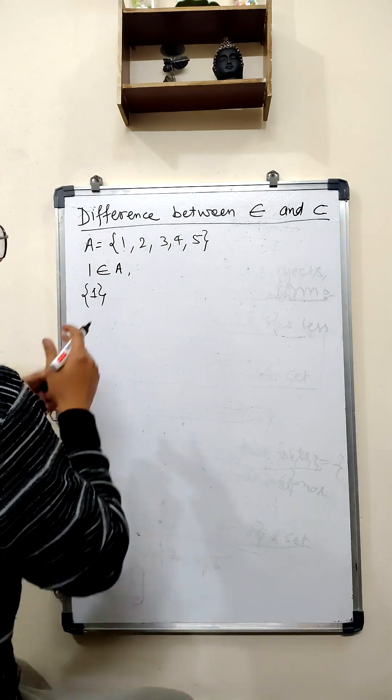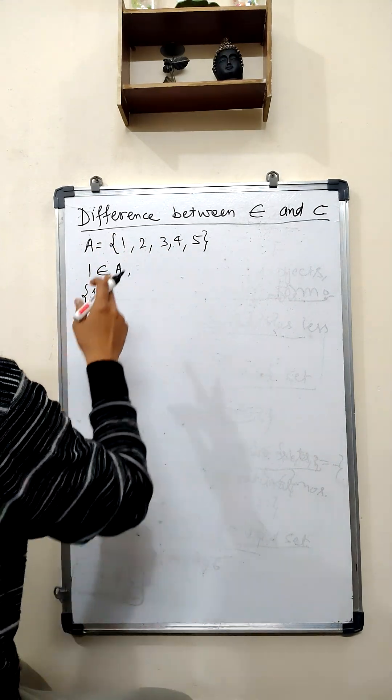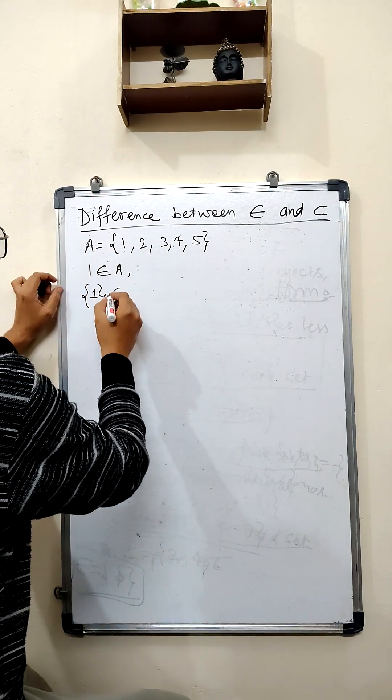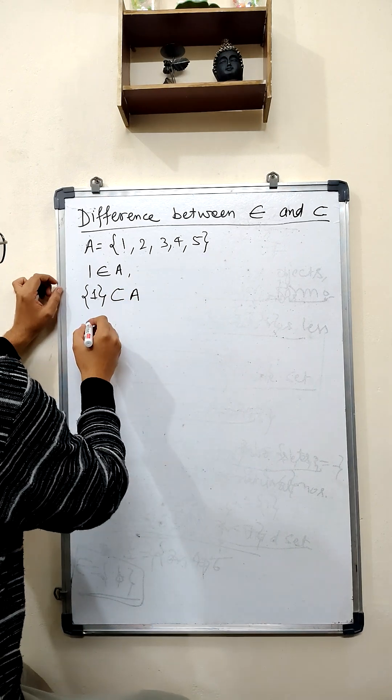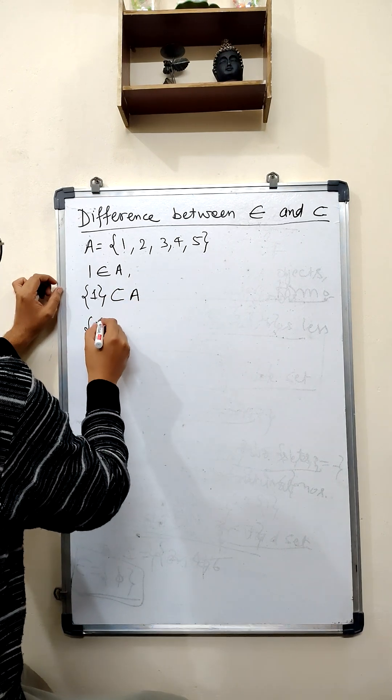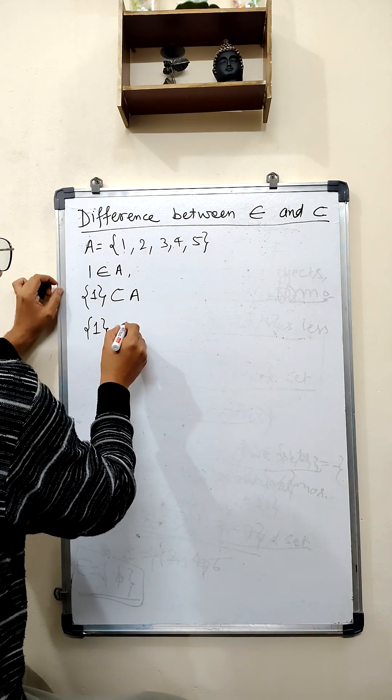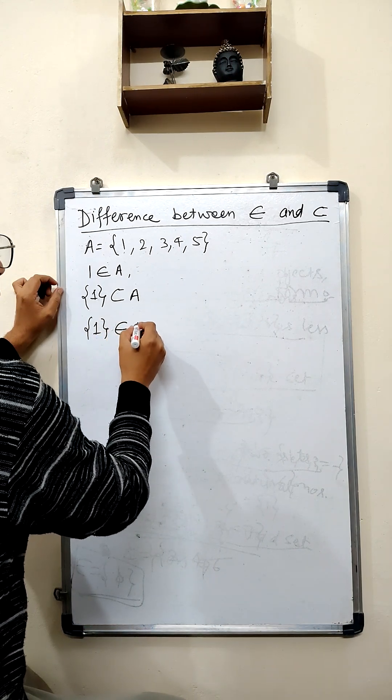Now, {1} is a subset of set A. But, we cannot write it as that 1 belongs to A.